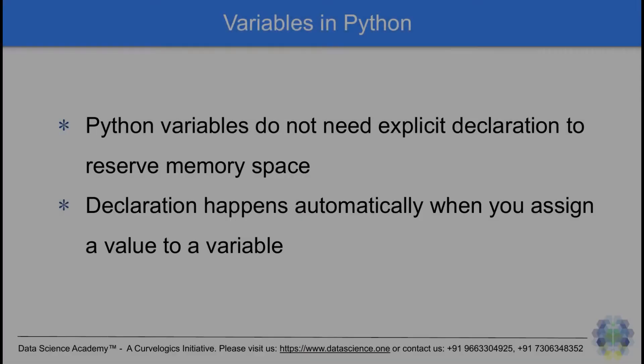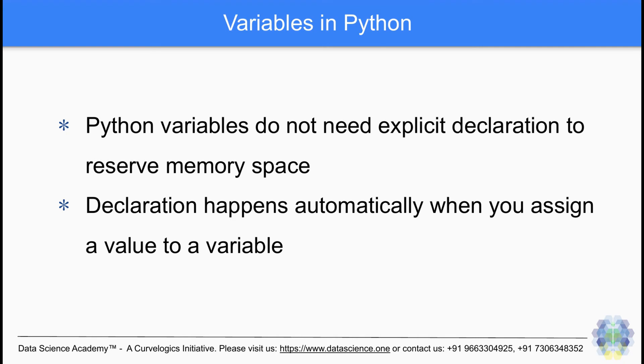Variables in Python have the following traits. Python variables do not need an explicit declaration to reserve memory space. Declaration happens automatically when a value is assigned to a variable.